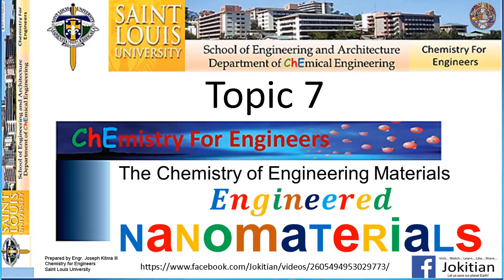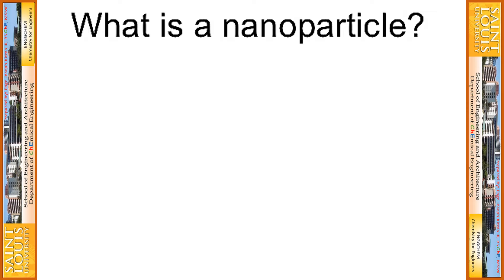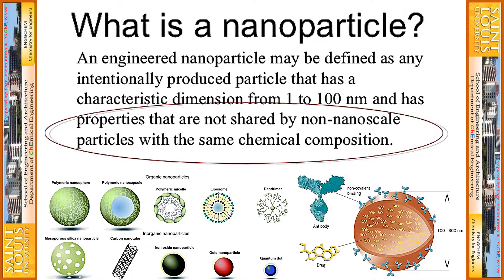One significant and important engineered material will be nanomaterials, and this is Topic 7. An engineered nanoparticle may be defined as any intentionally produced particle that has a characteristic dimension from 1 to 100 nanometers and has properties that are not shared by non-nanoscale particles with the same chemical composition. Even though materials are of the same chemical composition, varying their sizes means that properties are also changing.